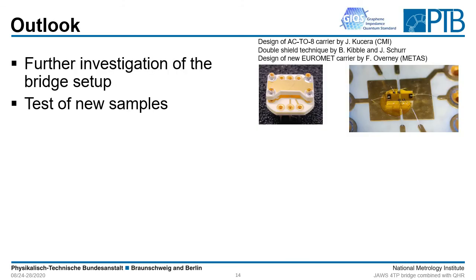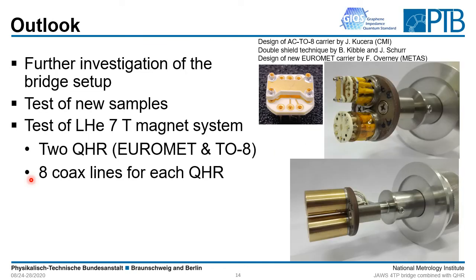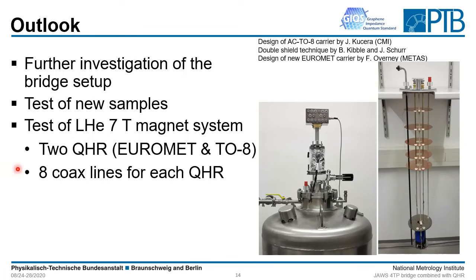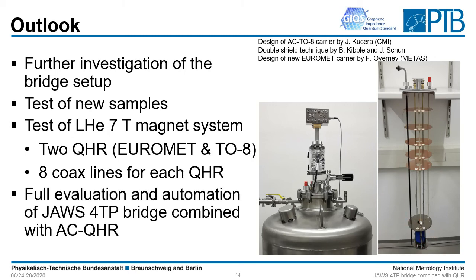For the outlook, we want to test new samples and investigate our bridge further. First, we want to test the ACTO8 header developed by Jan Kucera from the Czech Metrology Institute, and install it into our new system based on a seven Tesla magnet immersed in liquid helium. With this system we can cool down two samples at once — one header for the TO8 system and one for the Euromet system. I thank Frederic Ovener for his support in making this even easier than the previous version. We can then immerse the sample stick into liquid helium holding our seven Tesla cryomagnet, and once measurements start we want to fully evaluate our system at different frequencies and automate it to have a very compact and reliable four terminal pair impedance measurement with an AC quantum hall.